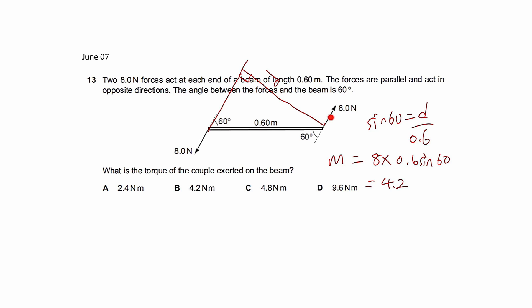So what is this perpendicular distance? If you use a bit of trigonometry, you get sin 60 equals D over 0.6. So therefore your perpendicular distance D is 0.6 sin 60. So you take the 0.6 sin 60 and multiply by 8, and you get your moments.